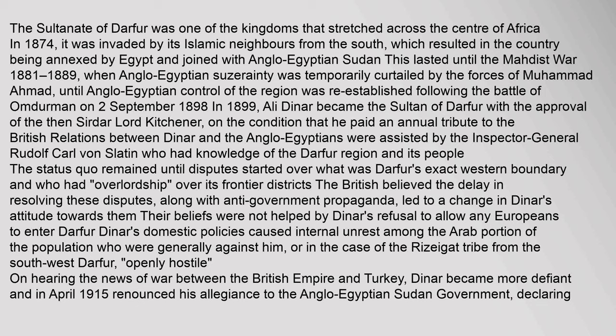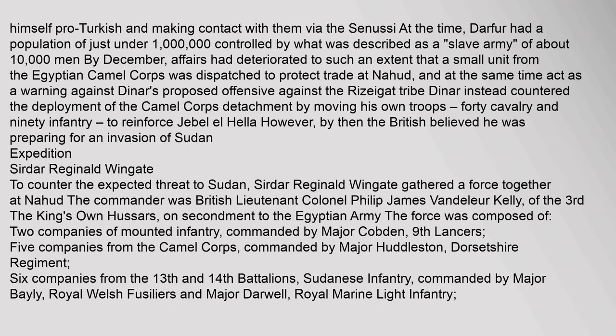On hearing the news of war between the British Empire and Turkey, Dinar became more defiant and in April 1915 renounced his allegiance to the Anglo-Egyptian Sudan government, declaring himself pro-Turkish and making contact with them via the Senussi. At the time, Darfur had a population of just under one million, controlled by what was described as a slave army of about 10,000 men. By December, affairs had deteriorated to such an extent that a small unit from the Egyptian Camel Corps was dispatched to protect trade at Nahud, and at the same time act as a warning against Dinar's proposed offensive against the Rizagat tribe. Dinar countered the deployment by moving his own troops — 40 cavalry and 90 infantry — to reinforce Jebel el-Hella.